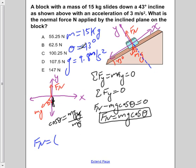Now, knowing this, we plug in our values, so m, 15 kilograms, g, 9.8 meters per second squared, times cosine of 43 degrees.